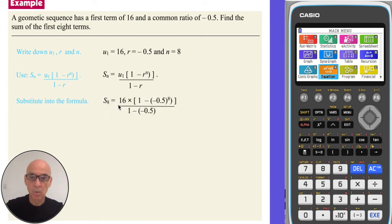Sn as given in your formula. So r equals negative 0.5, and n equals 8, as shown.